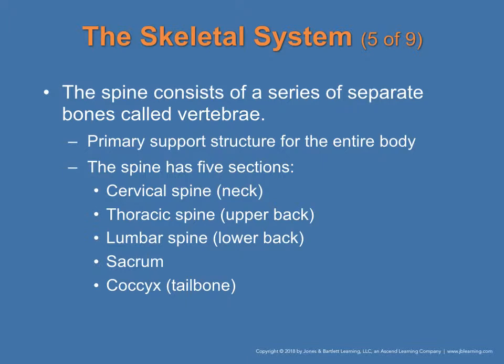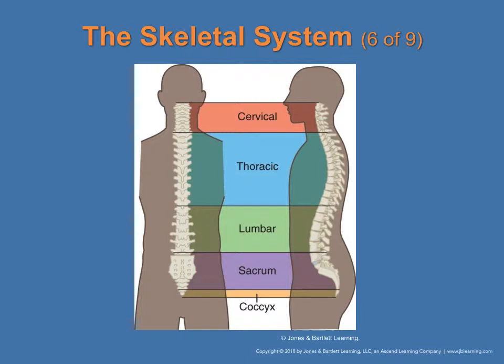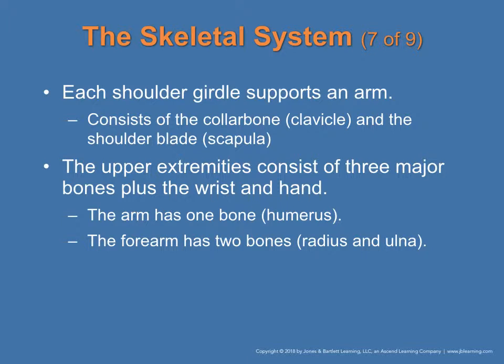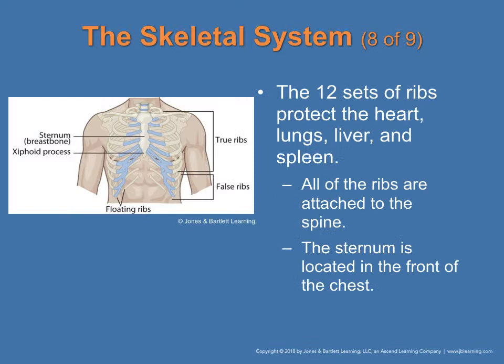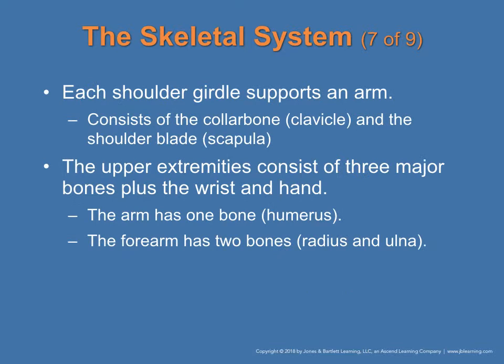The spine consists of a series of separate bones called vertebrae: the cervical spine, thoracic vertebrae, lumbar, sacrum, and coccyx. Each shoulder girdle supports an arm and consists of the clavicle, the scapula in the back, and the head of the humerus, which is the upper arm bone. The upper extremities consist of three major bones plus the wrist and hand.